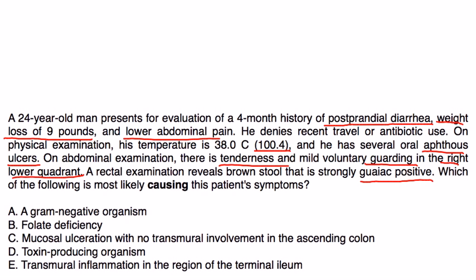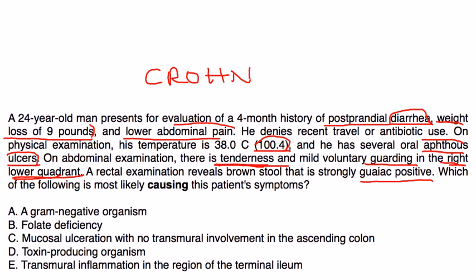Rectal exam reveals brown soft stool that is strongly guaiac-positive. The most likely diagnosis is Crohn's disease. The patient has diarrhea, weight loss, abdominal pain, a low-grade fever, aphthous ulcers — which are associated with Crohn's — and right lower quadrant tenderness, which points to the terminal ileum. The terminal ileum is affected in almost half of all Crohn's disease cases.